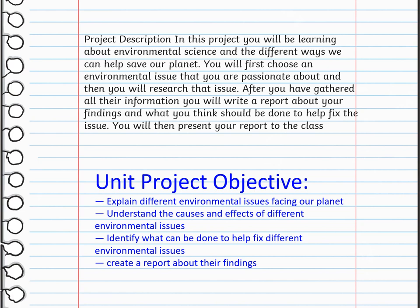You will have a project about environmental science and the different ways we can help save our planet. You will choose an environmental issue you are passionate about, research it, write a report about your findings and what should be done to fix the issue, and present your report to the class. The objectives include explaining environmental issues, understanding cause and effect, identifying solutions, and creating a report.